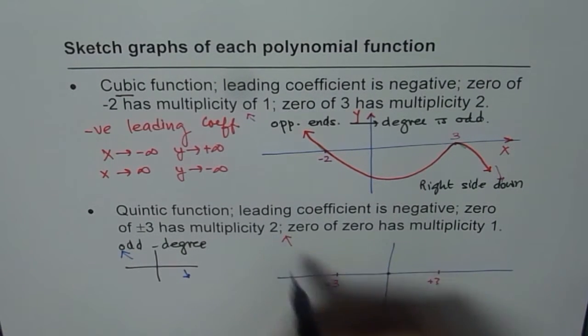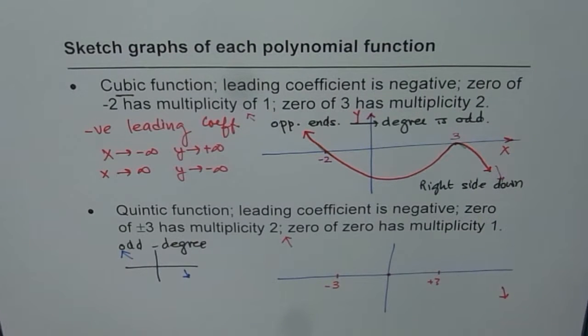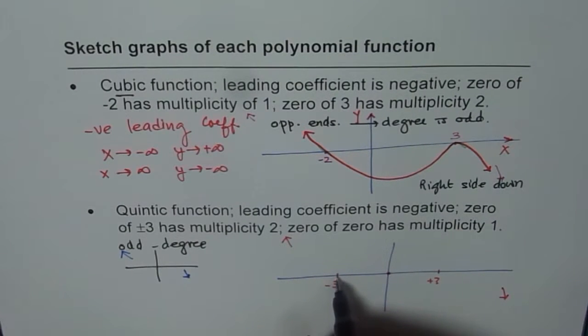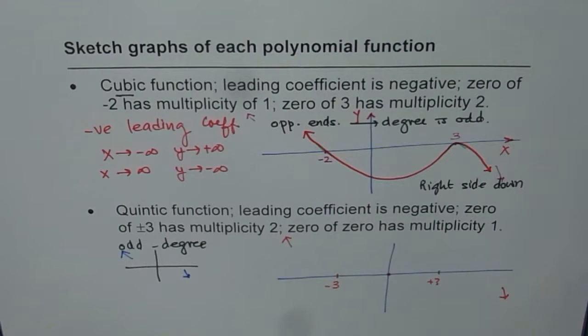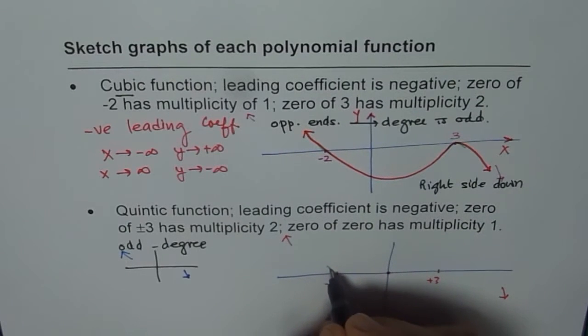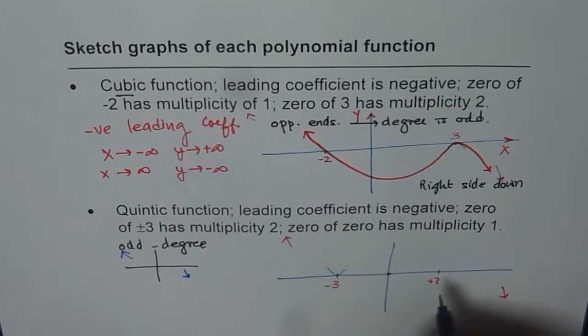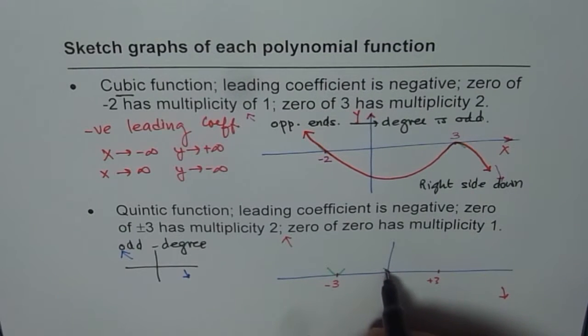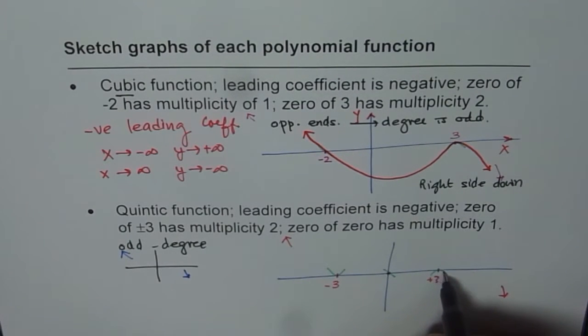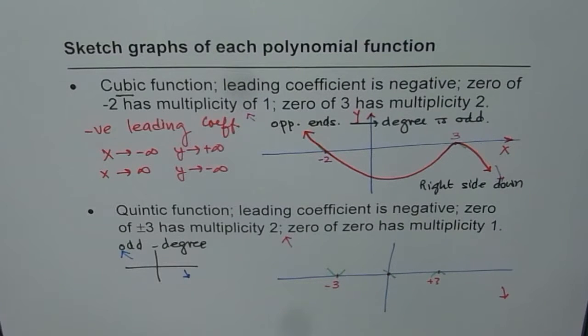End behavior we know. We have to move from this direction and end there. When we say multiplicity is 2, that means our graph will turn. So there is a turning point, bounces back. Here it has to go like a line and here it has to turn and it makes sense. It is going in the direction we want it.